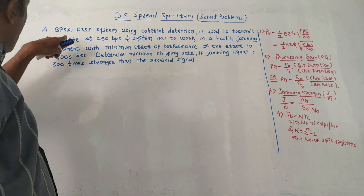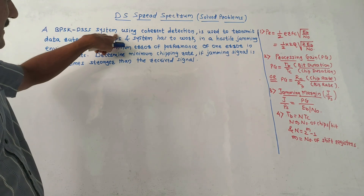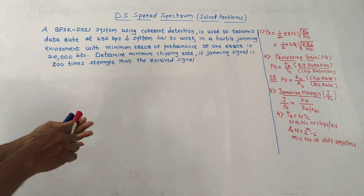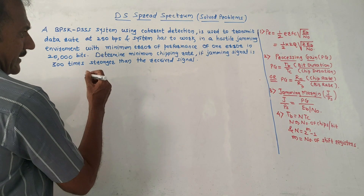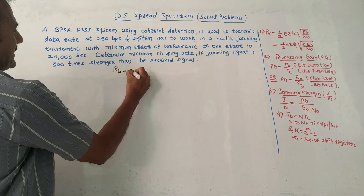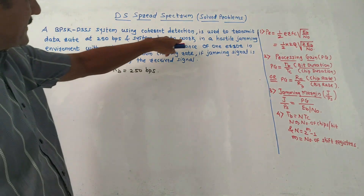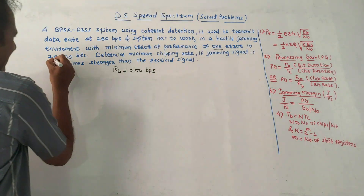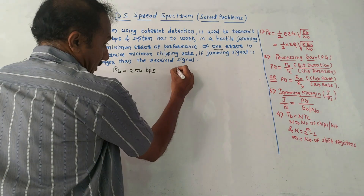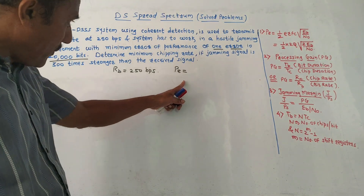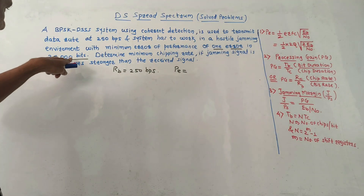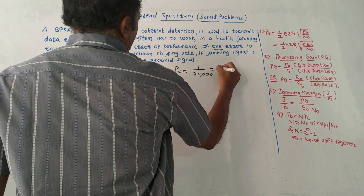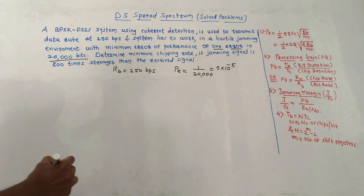Now let us solve a different kind of numerical. A BPSK DSSS direct sequence spread spectrum system using coherent detection is used to transmit data at a rate of 250 BPS. So RB is given as 250 BPS. The system has to work in a hostile jamming environment with minimum error performance of one error in 20,000 bits — that is the probability of error. So PE equals 1 upon 20,000, which is 5 into 10 raised to minus 5.